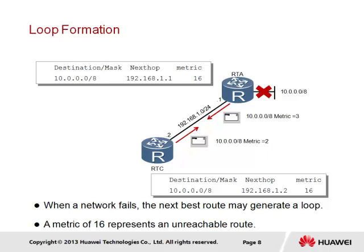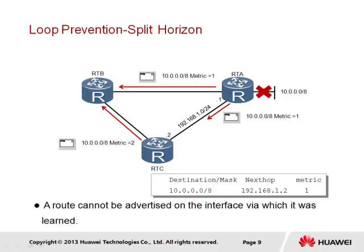Since RIP contains a limit on the hop count, when the metric reaches 16 the route will be deemed unreachable, thus preventing counting to infinity. However, time is still required before the route can be deemed unusable, and so the network may not be stable for a period of time until a hop count of 16 is reached. It is important for this convergence time to be improved, and so another process to handle this is required.